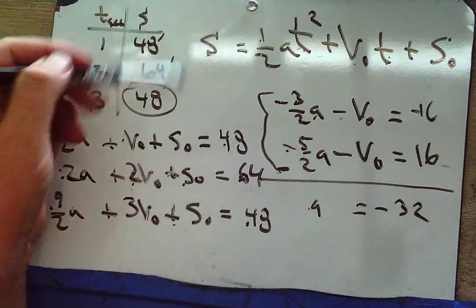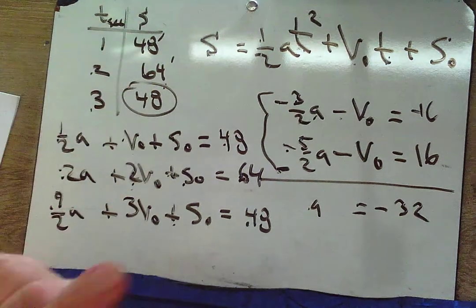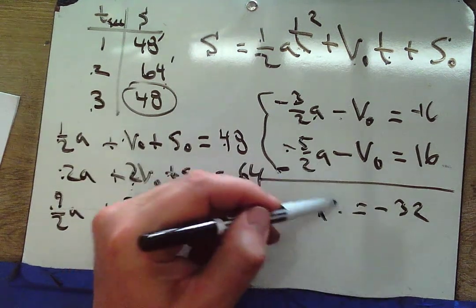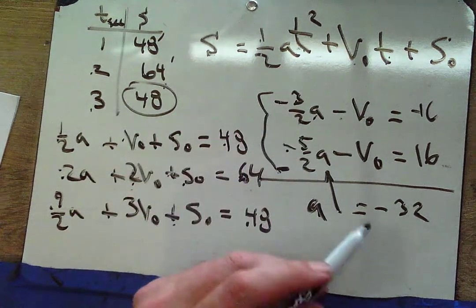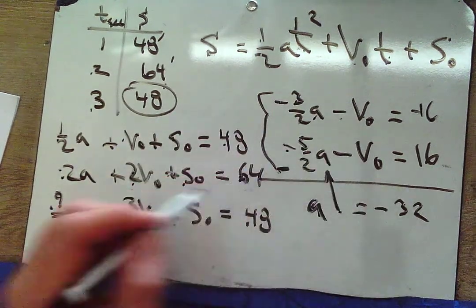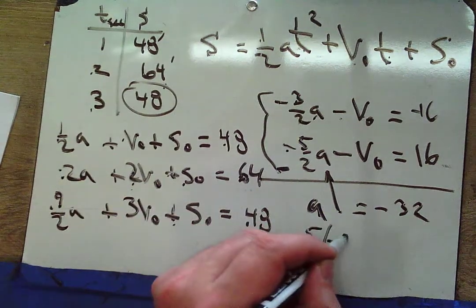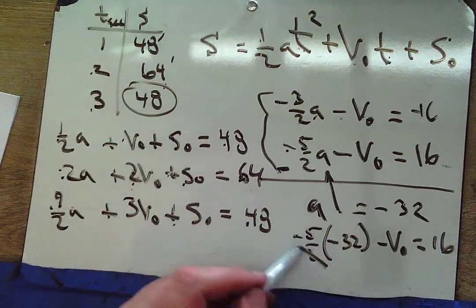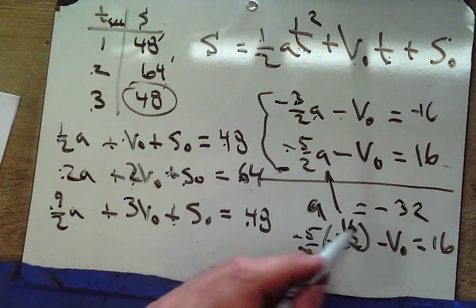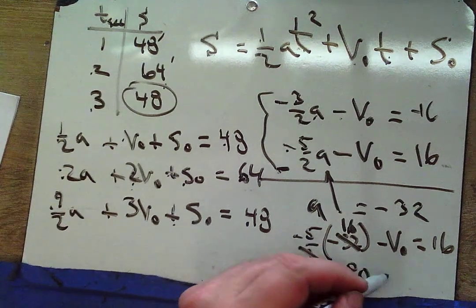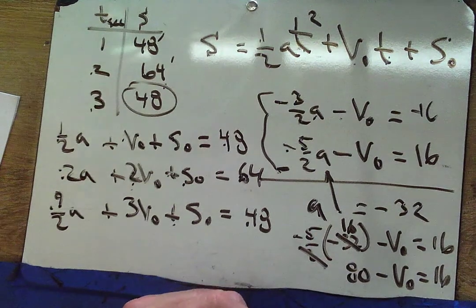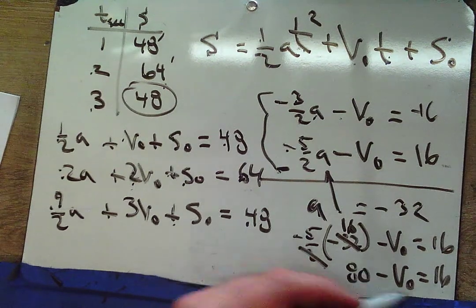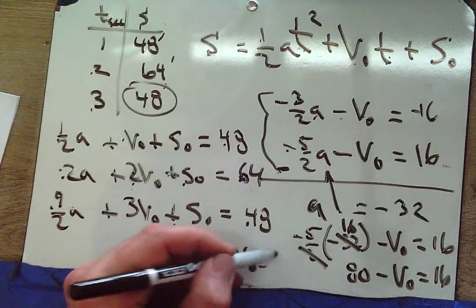If you don't get negative 32 when working in feet, you made a mistake somewhere. Now take a = negative 32 and plug back in: negative (5/2) times negative 32 minus v₀ equals 16. That's positive 80 minus v₀ equals 16. Subtracting and rearranging gives v₀ equals 64.